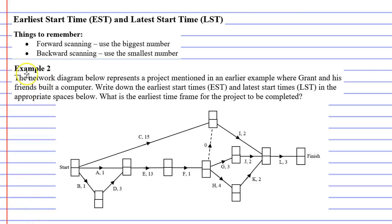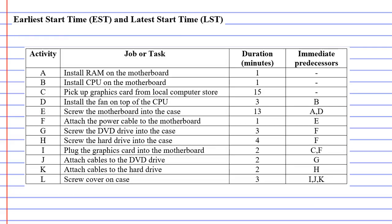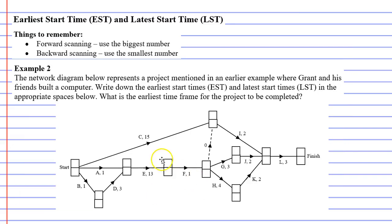In this video, we're going to complete example two, and we're going to write down the earliest start times and latest start times in the diagram below. Some of you might recognize this network diagram from a previous video where Grant and his friends built a computer. The precedence table that goes with this network diagram is shown here, however you don't really need it to fill in the earliest and latest start times.